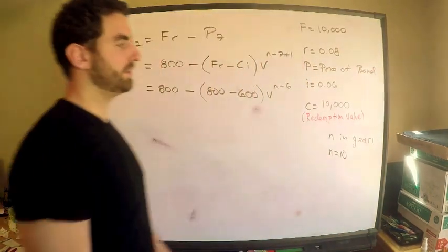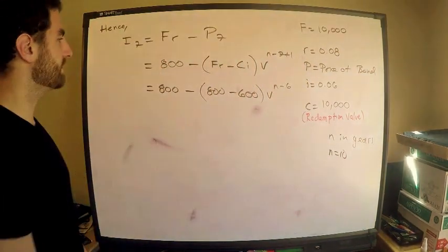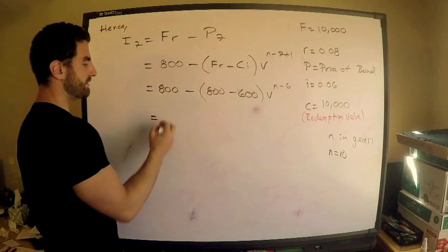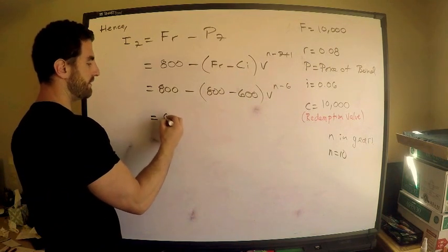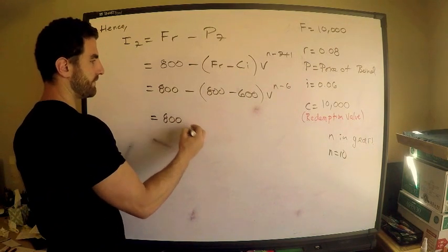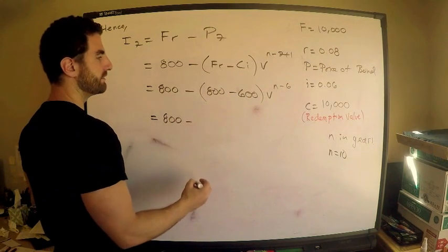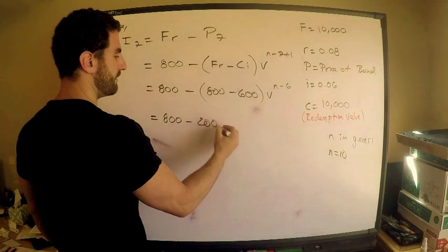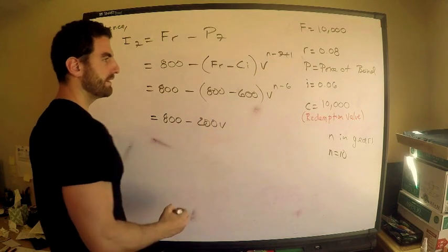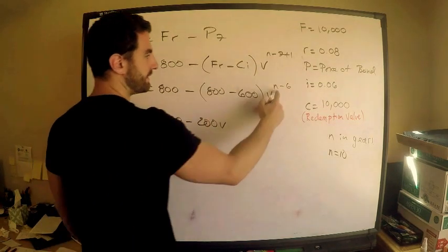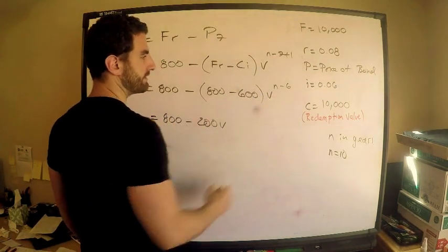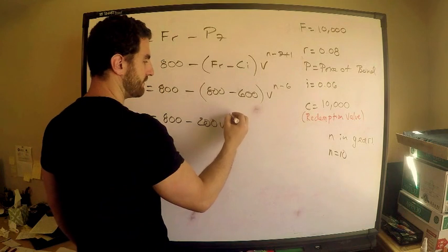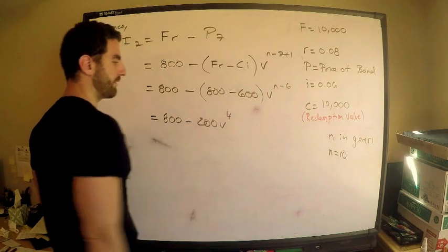Simplifying: I_7 equals 800 minus 200 times v to the 4th power, which is 800 minus 200 times (1.06) to the negative 4. This is quite easy to evaluate on the calculator.